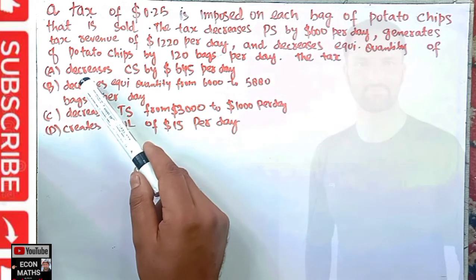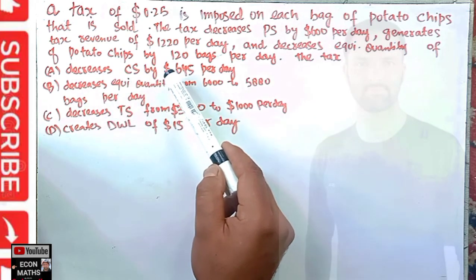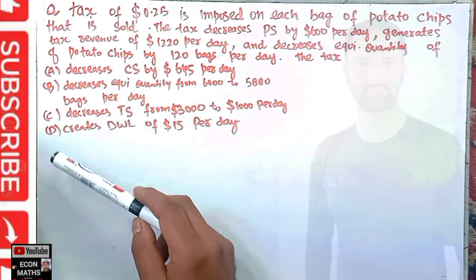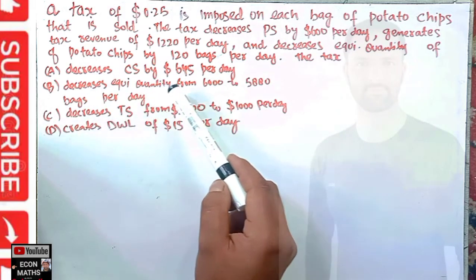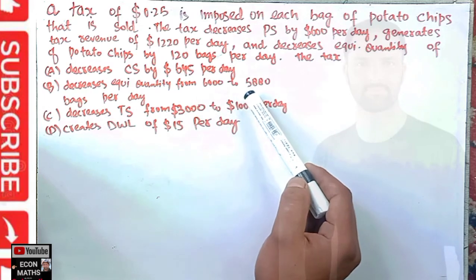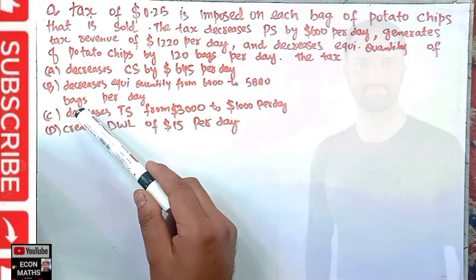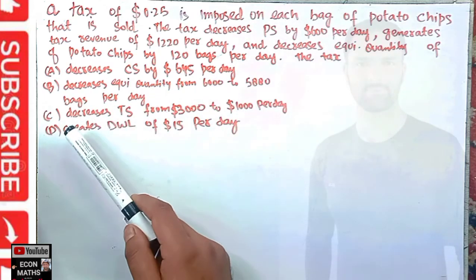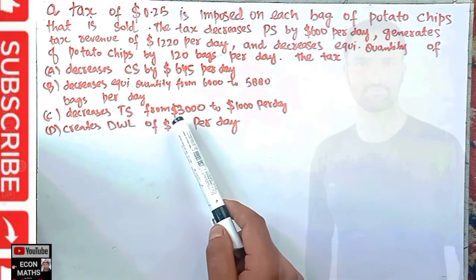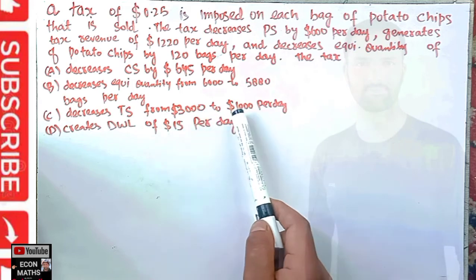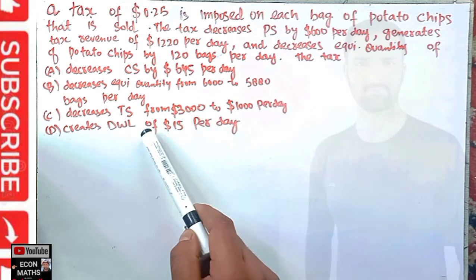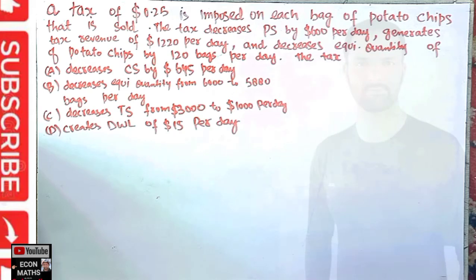The options are: (A) decreases consumer surplus by $645 per day; (B) decreases equilibrium quantity from 6,000 to 5,880 bags per day; (C) decreases total surplus from $3,000 to $1,000 per day; or (D) creates a dead weight loss of $15 per day. We will evaluate each option.